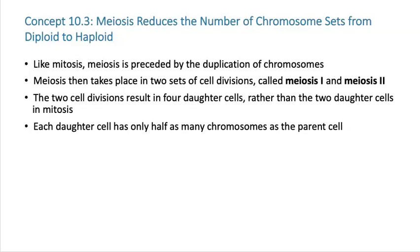Meiosis is then going to be very different from mitosis in a lot of ways. For example, meiosis is going to take place in two sets of cell divisions called meiosis I and meiosis II. The two cell divisions are going to result in four daughter cells rather than the two daughter cells that we saw in mitosis. But super important — each daughter cell is only going to have half as many chromosomes as the original parent cell.